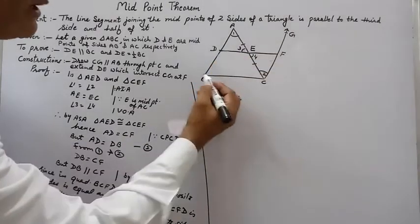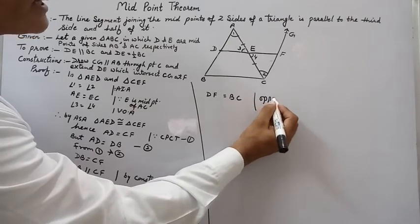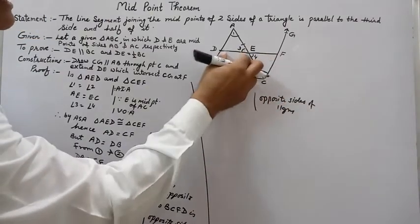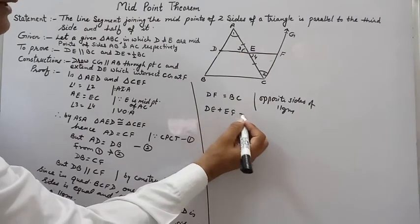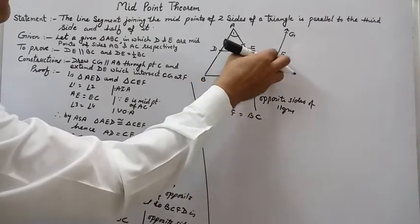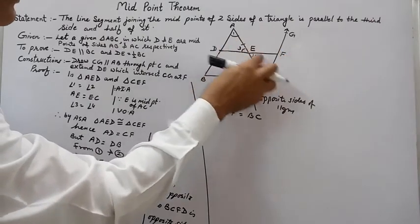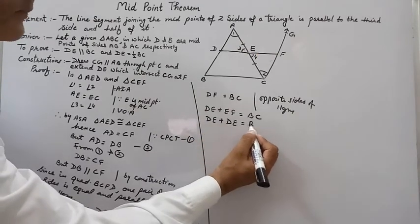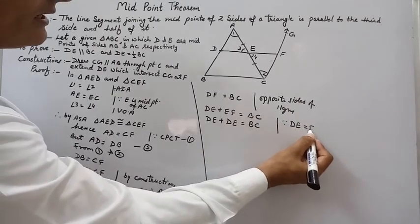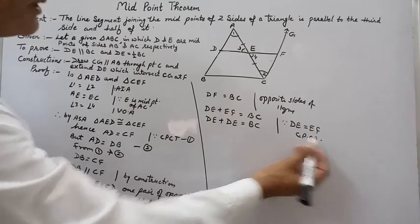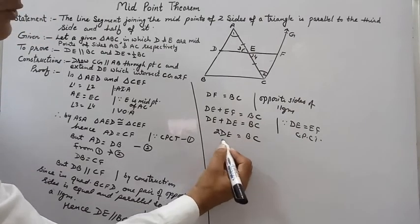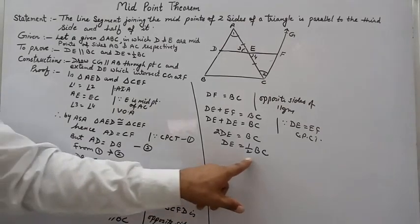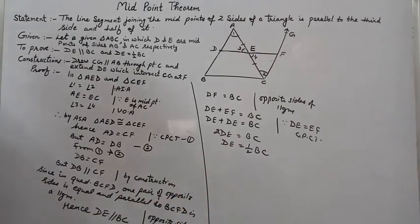Now, DF equals BC because these are opposite sides of the parallelogram. We can write DF as DE plus EF, so DE plus EF equals BC. Since DE equals EF by CPCT from the congruent triangles, we substitute EF with DE, giving 2DE equals BC. Therefore DE equals half of BC. Hence we have proved DE is parallel to BC and DE equals half of BC — the midpoint theorem is proved. Thanks for watching.